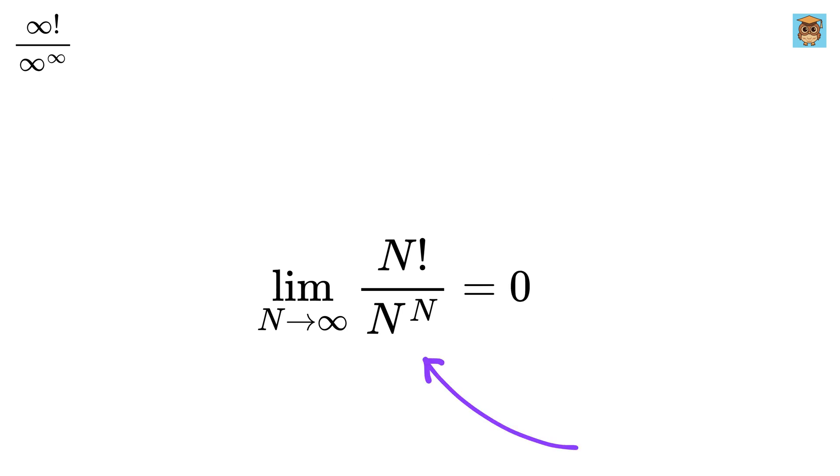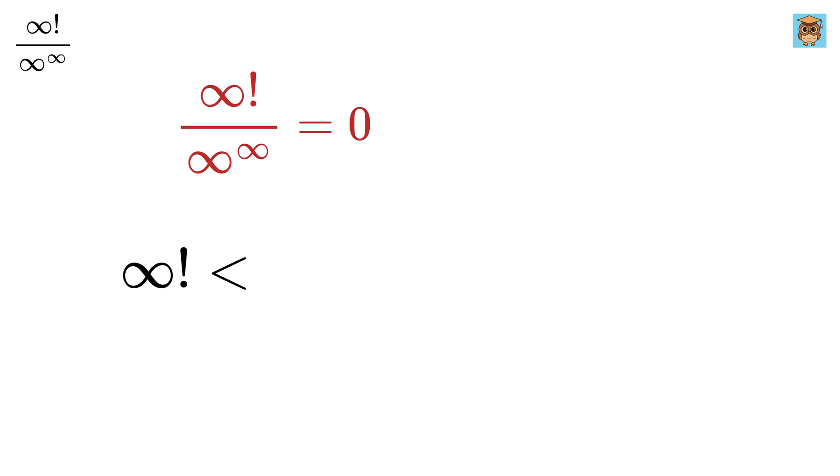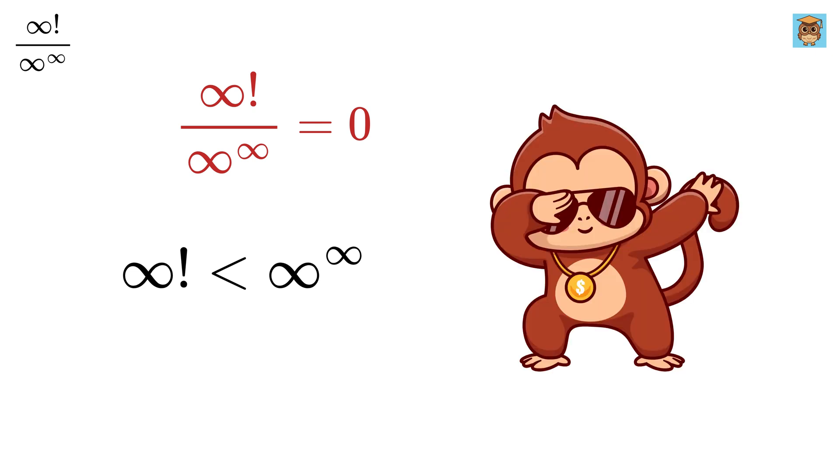Now, put infinity here to get this limit as infinity factorial divided by infinity raised to the power infinity, which is none other than 0. This means that infinity factorial is less than infinity raised to the power infinity. Isn't this super cool?